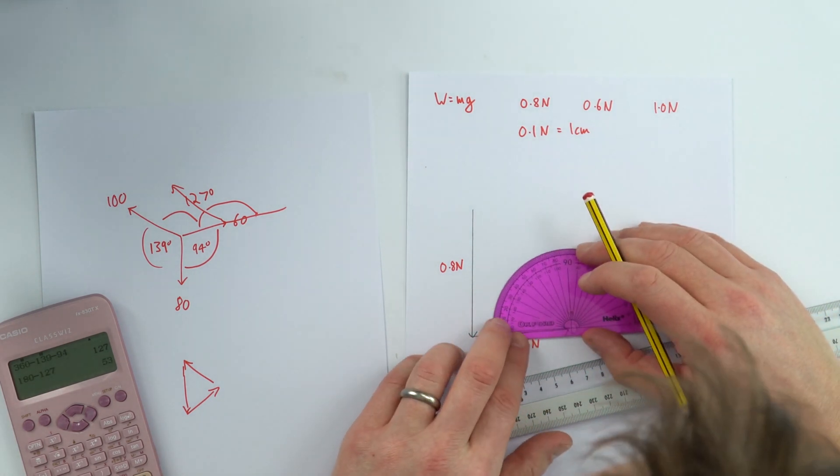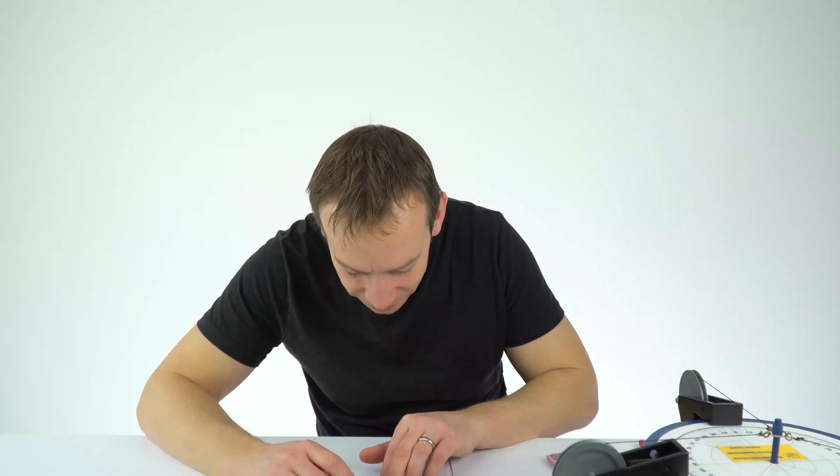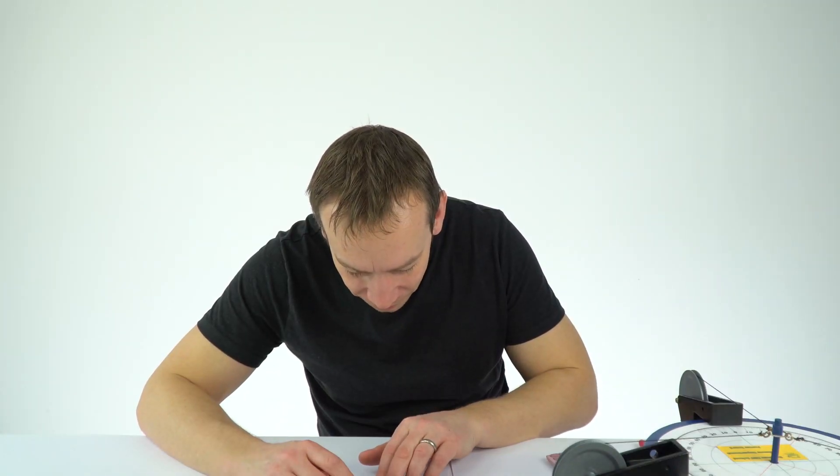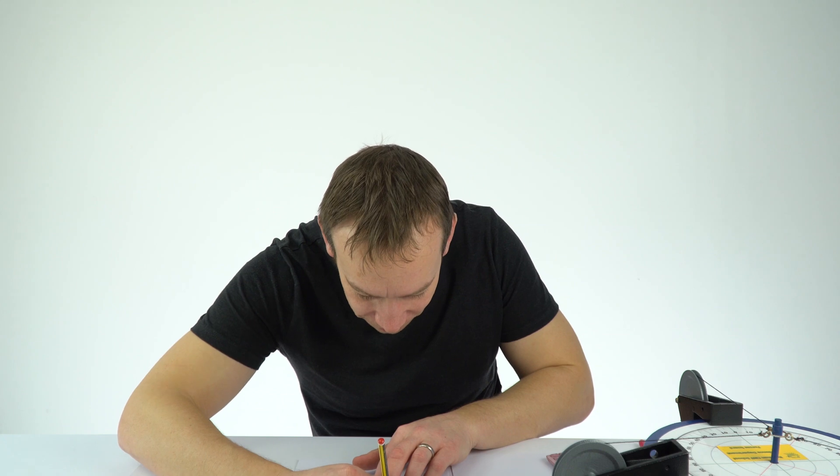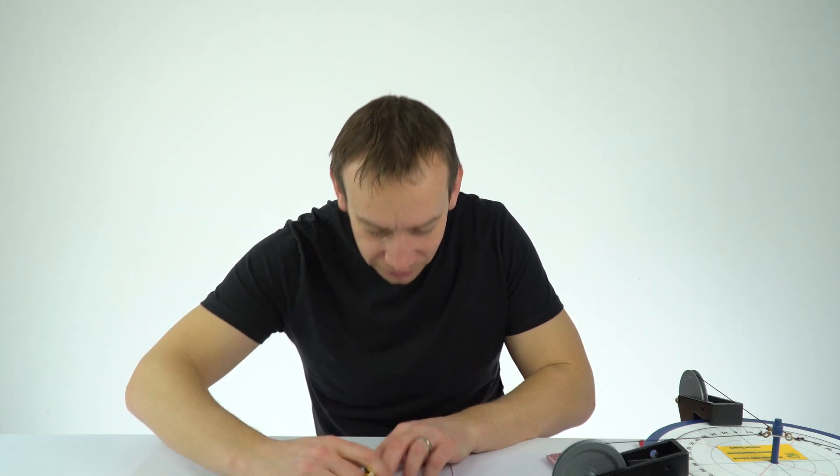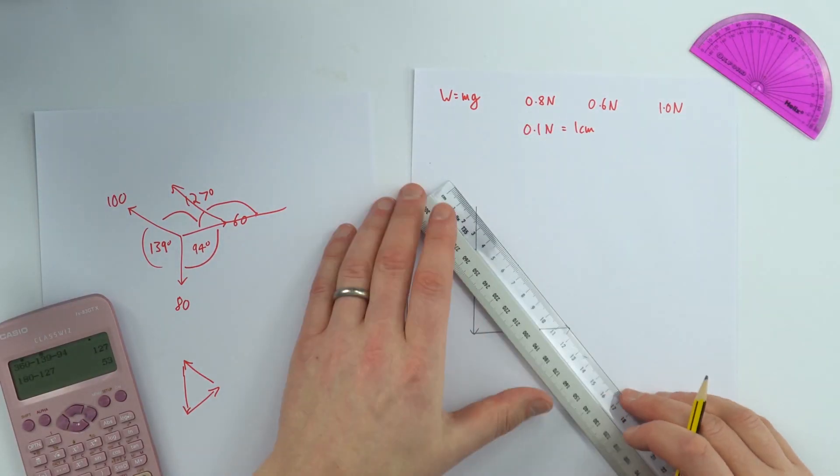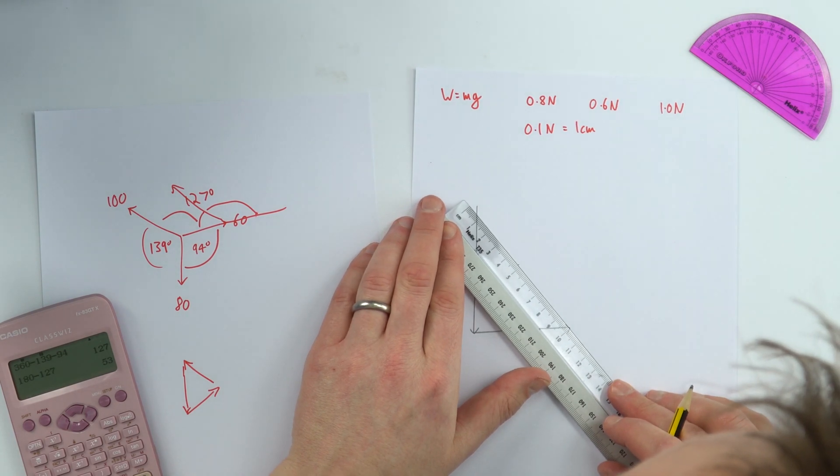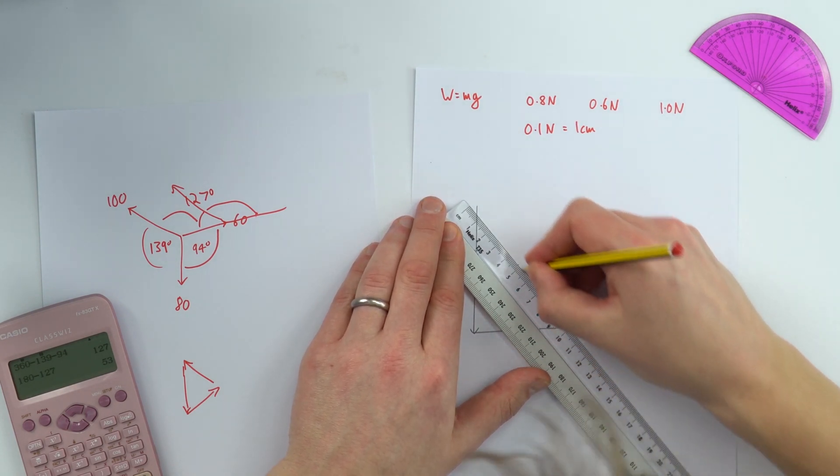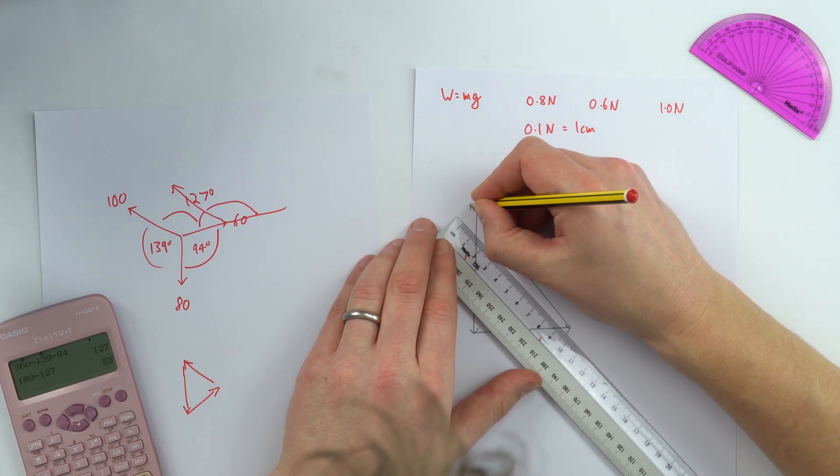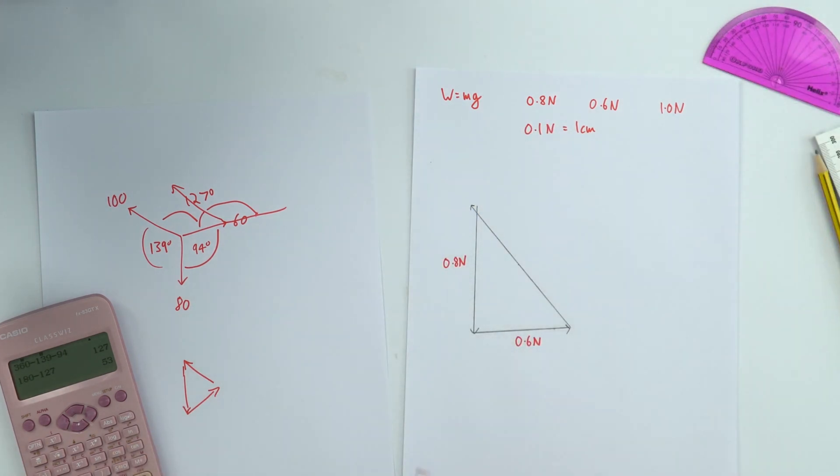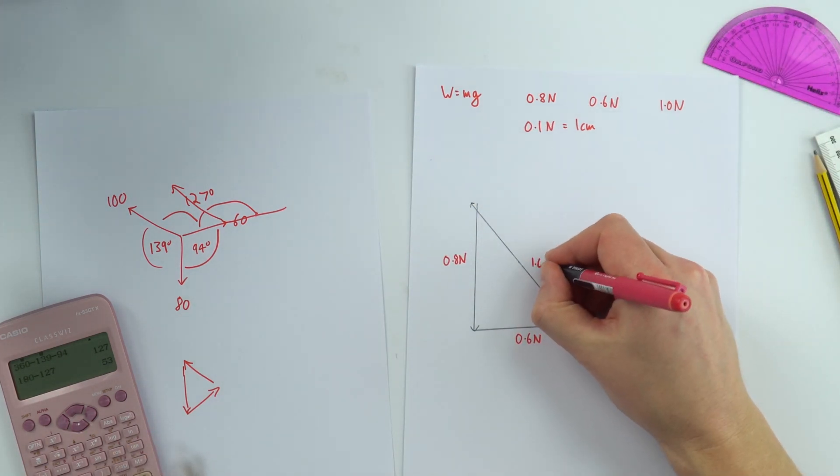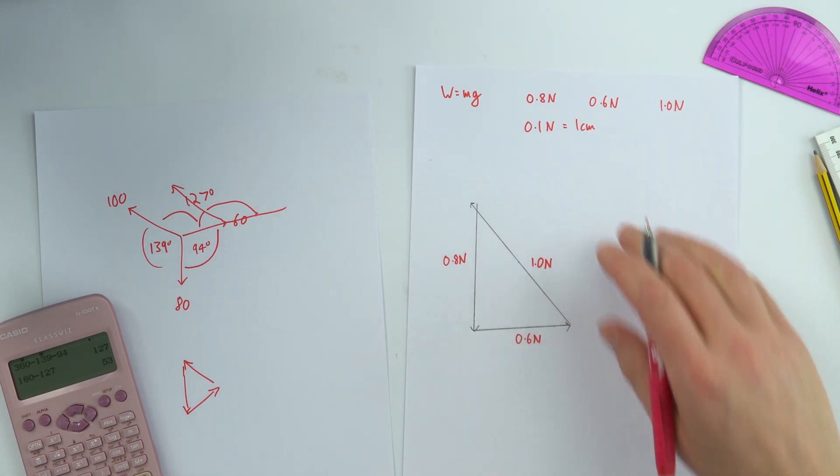I'm going to measure the angle of 53 like this. I'm going to draw in a line which is 10 centimeters long. So that goes to there. This one over here is my 1.0 newton force.